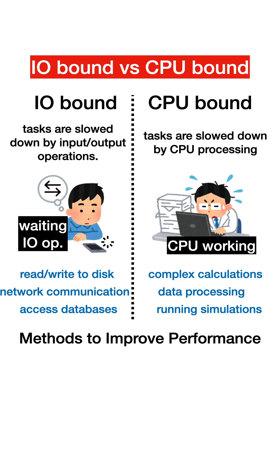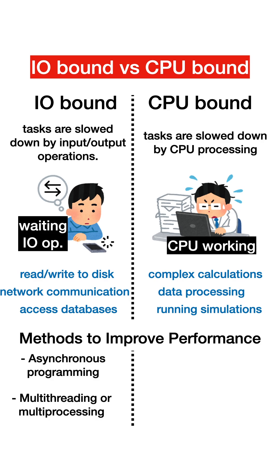There are methods to overcome these kinds of slowdowns. For IO-bound tasks, we can use asynchronous programming, which allows the program to perform other tasks while waiting for IO operations to complete. Another approach is multi-threading or multi-processing, which handles IO tasks simultaneously, reducing idle time.